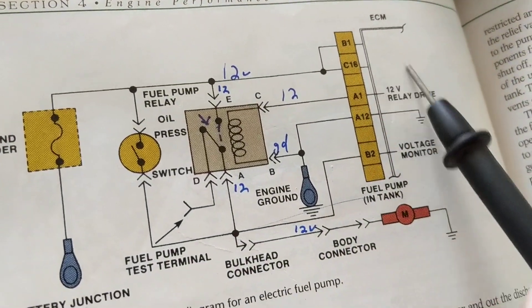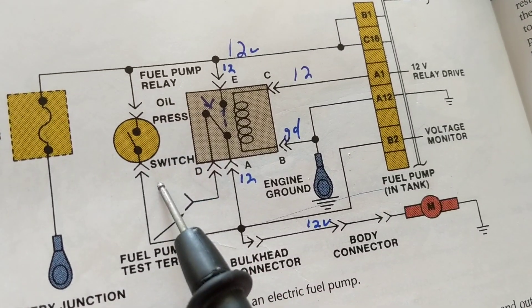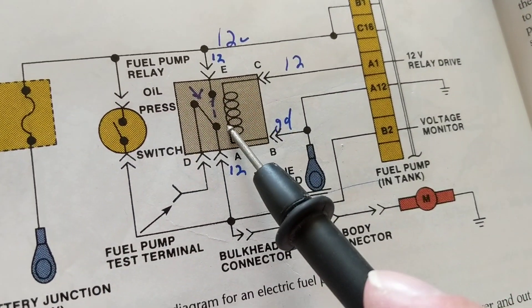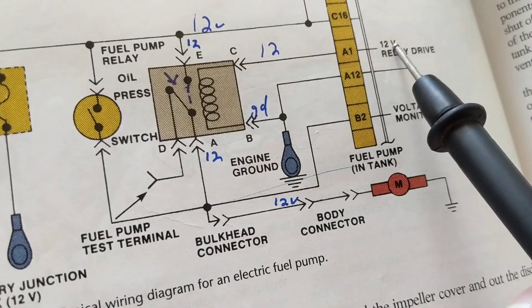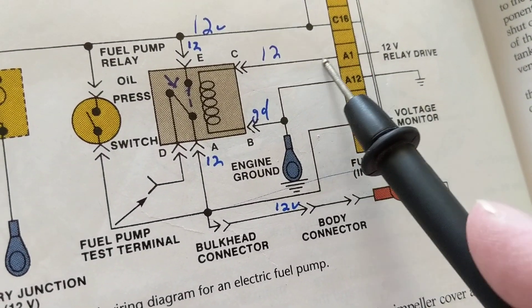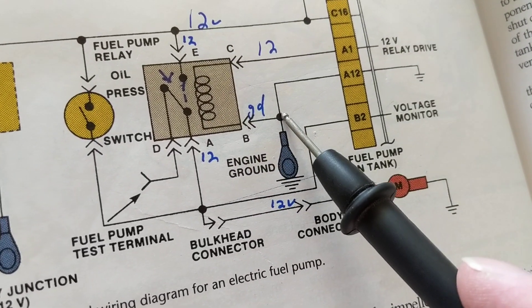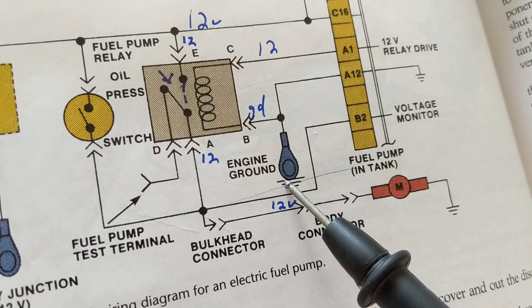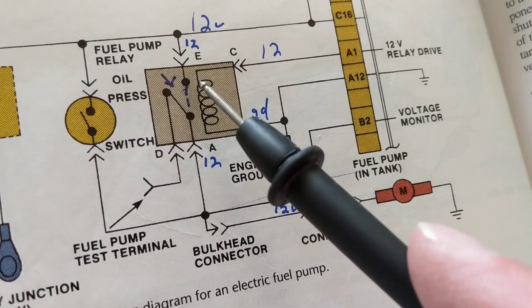Over here we have a computer controlling this. Over here we have the 12 volts going to oil pressure switch. Over here we have the relay going to the fuel pump, which is the load. Now 12 volts we have current flowing through here, through here, through here, through a physical ground, through here. Once that happens, this is activated.